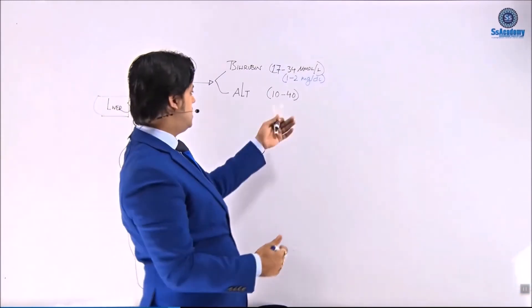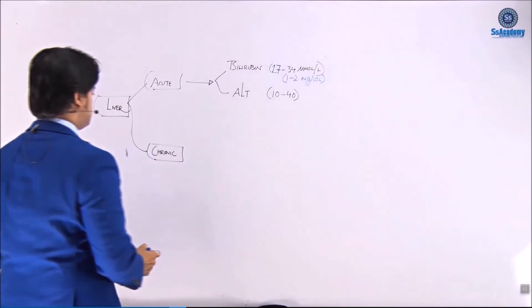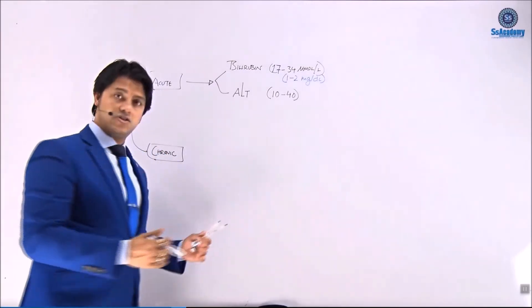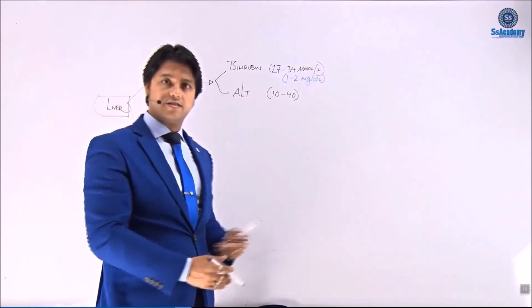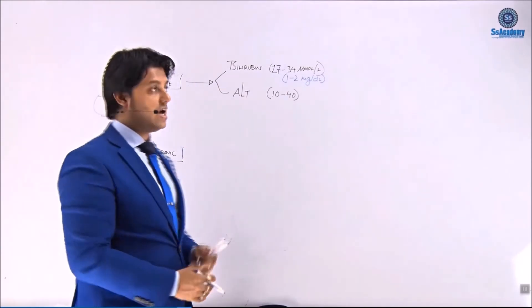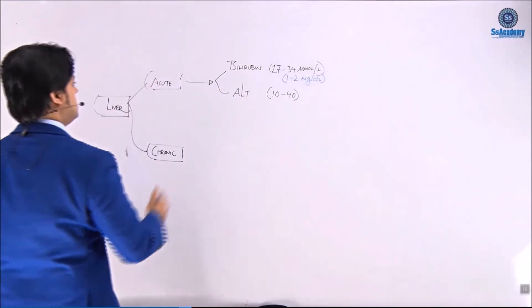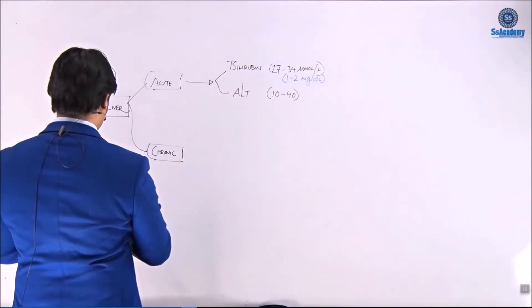So here is the 17 to 34 and after 40 is the ALT. So the liver acutely produces the bilirubin and ALT within these normal ranges. Yes, acute function of the bilirubin as well as the ALT. Chronically liver.